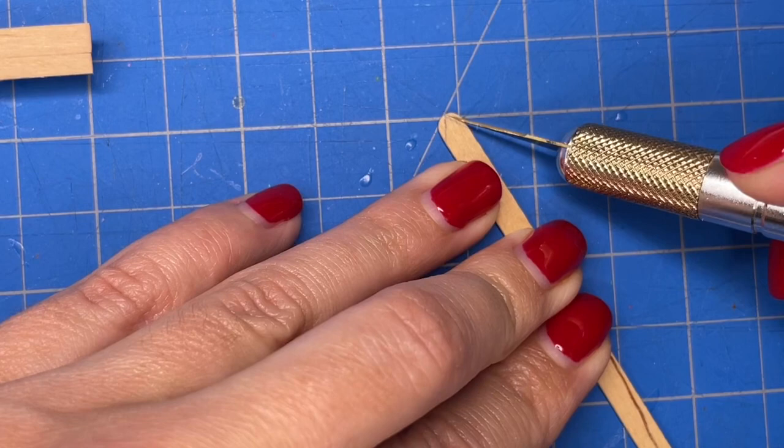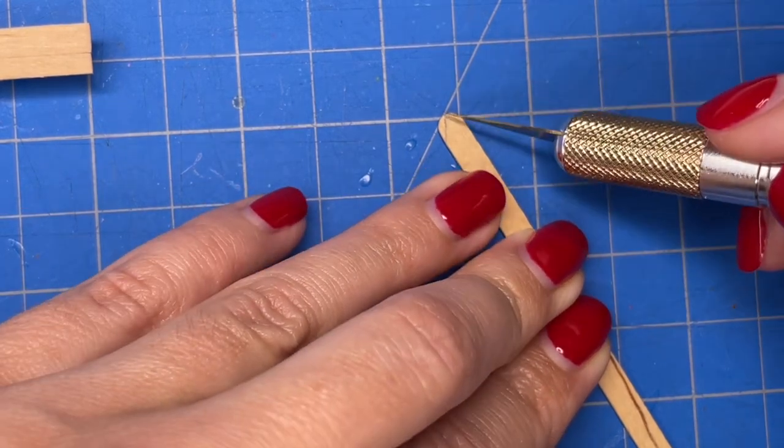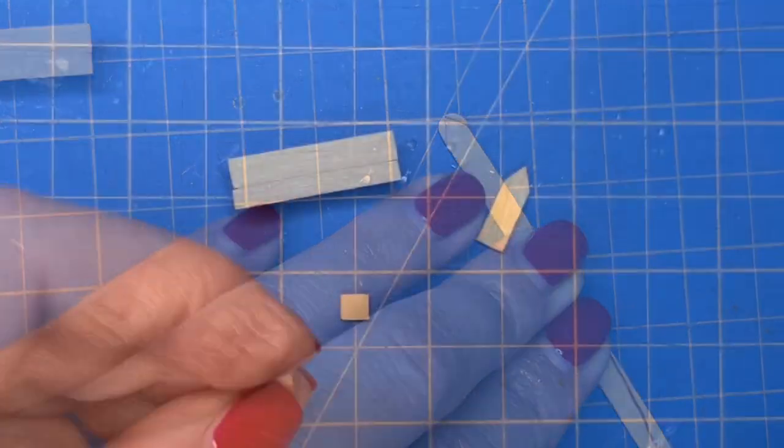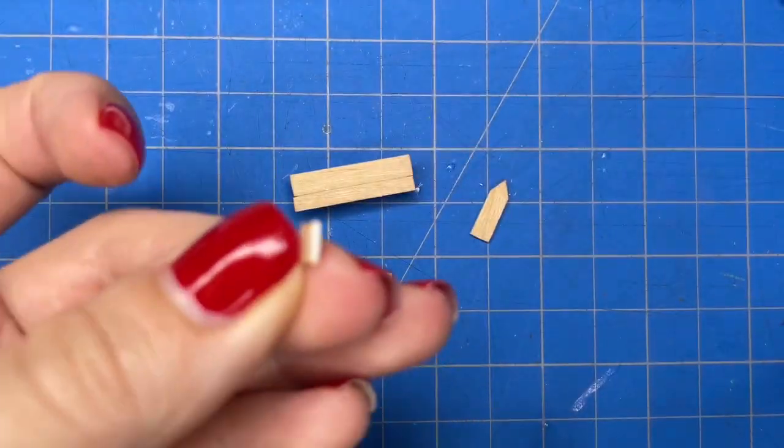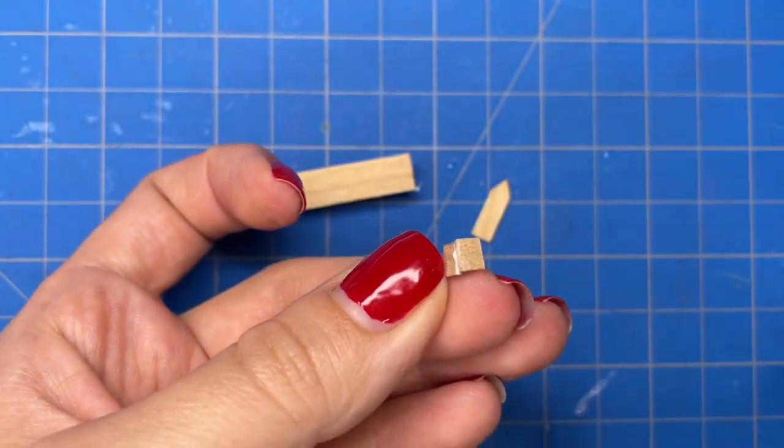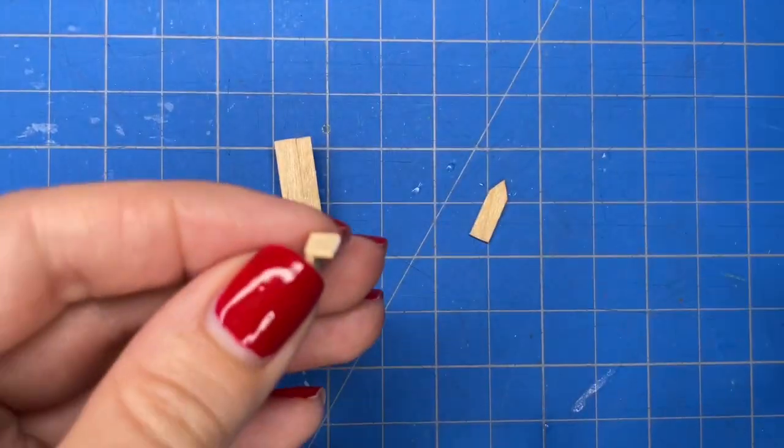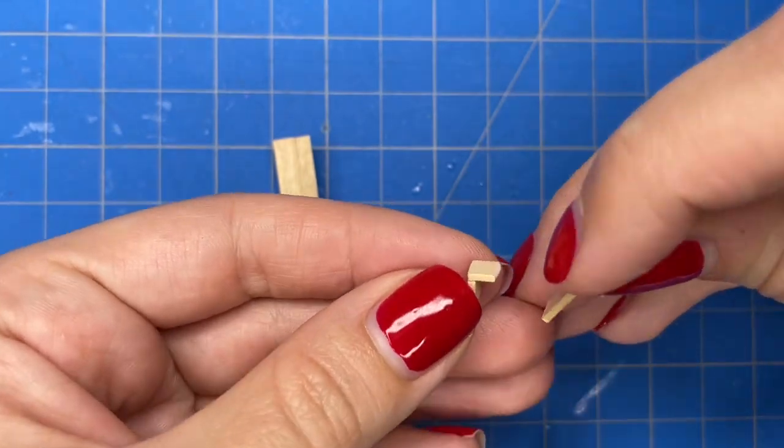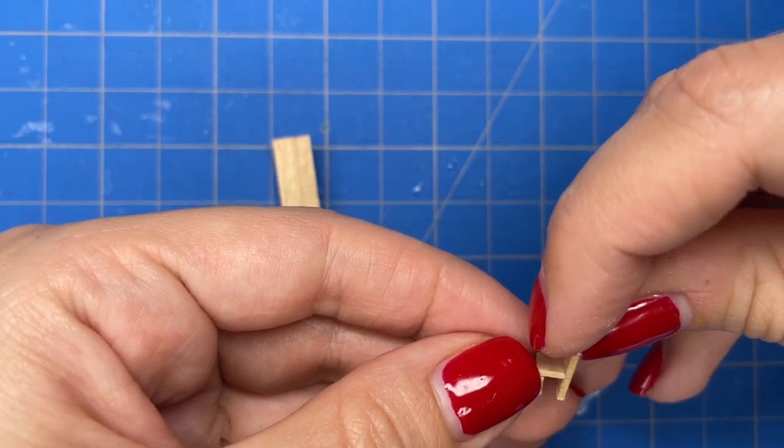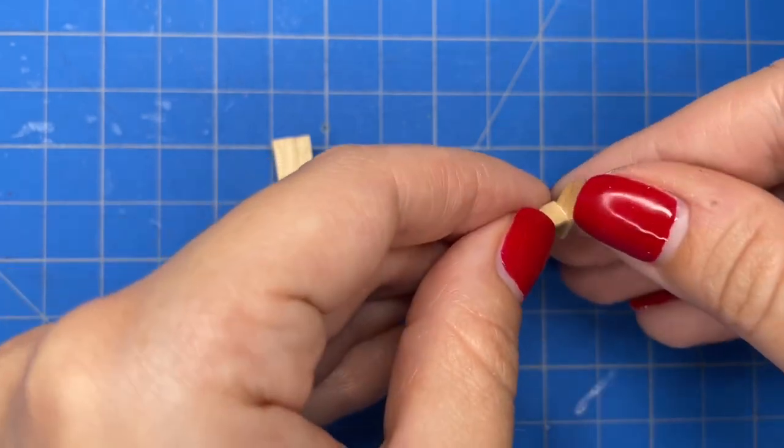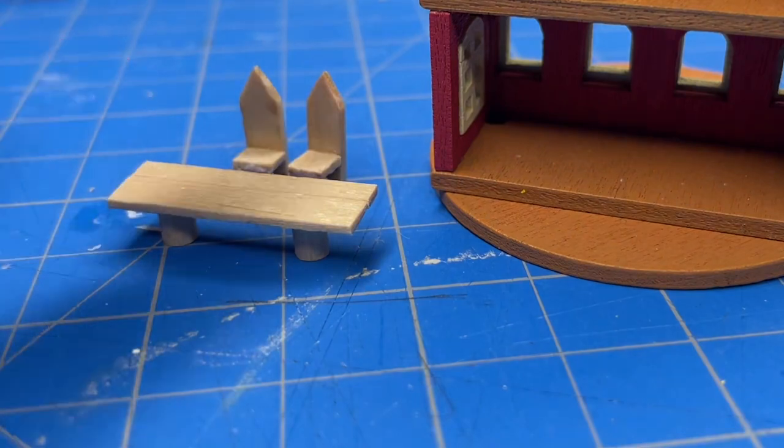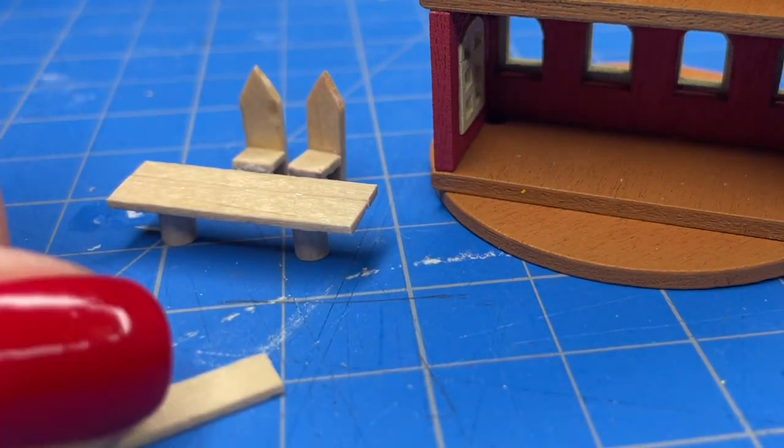So for the chairs I grabbed some coffee stirs and I cut off the edges to make a sharp point and then I cut two smaller pieces from the coffee stir and that is going to be the base of the chair and then I glued them all together. So these two chairs are going to be for like the queen and king and then I'm going to make some smaller chairs.